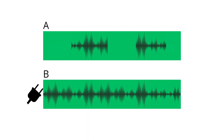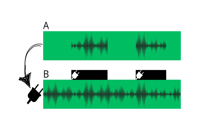And that's what side-chaining does — it sends the signal from track A to the plug-in on track B, so that when audio is present on track A, the plug-in on track B does what it's supposed to do. When the audio on track A goes away, the plug-in stops. If that sounds confusing, I promise it's going to get super easy really soon — just stick with me.